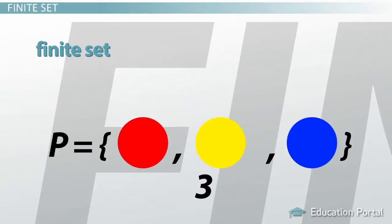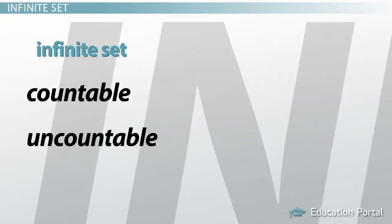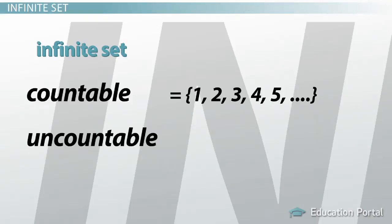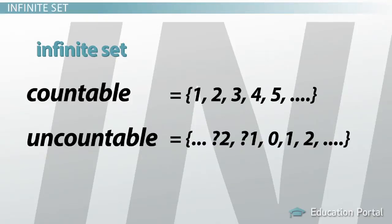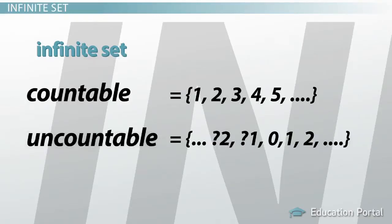We would write it as |P| = 3. An infinite set is a set with an infinite number of elements. There are two types of infinite sets: countable and uncountable. A countable infinite set is one that can be counted, though you may never get to the last number — an example is the set of all integers. An uncountable infinite set is one that cannot be counted because it is too large — an example is the set of all real numbers, which equals all rational numbers and irrational numbers.